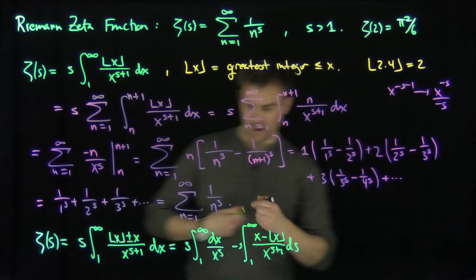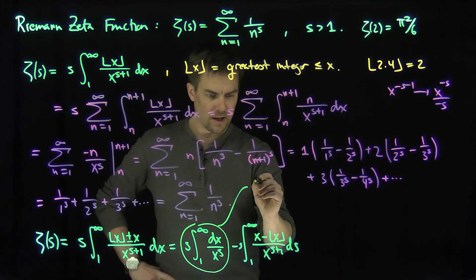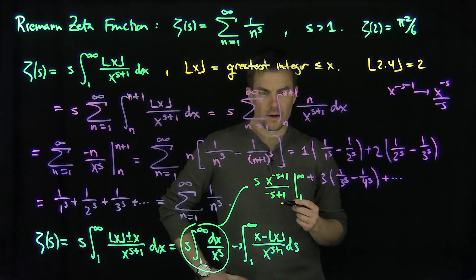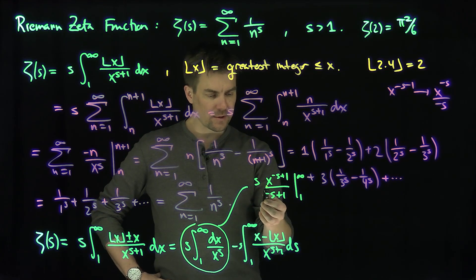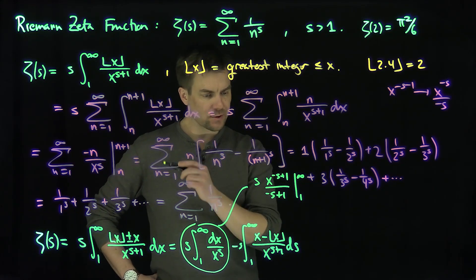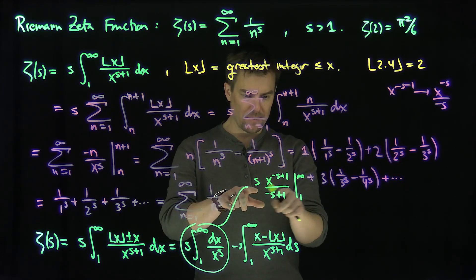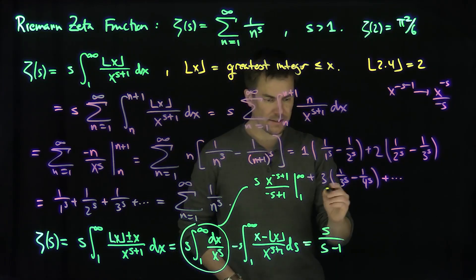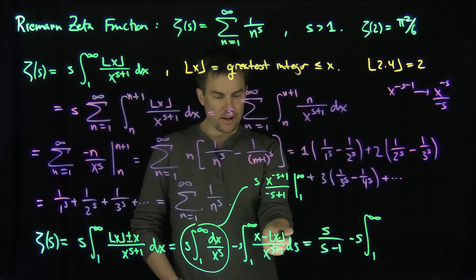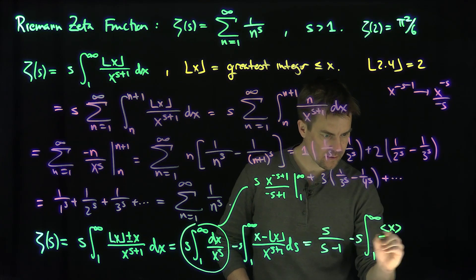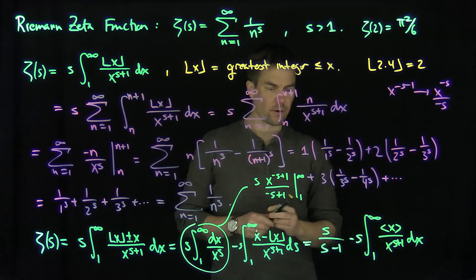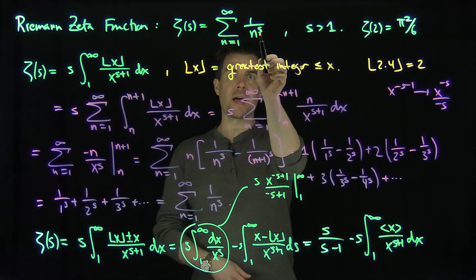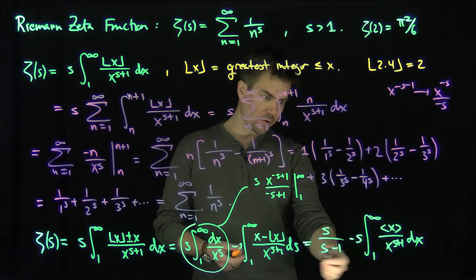The first integral gives s times x to the negative s plus 1 over negative s plus 1, evaluated from 1 to infinity. The upper limit vanishes, and plugging in x equals 1 yields s over s minus 1. So zeta of s equals s over s minus 1 minus s times the integral from 1 to infinity of the fractional part of x over x to the s plus 1 dx. This is very useful because as s tends to 1, we see exactly the structure of the singularity of the Riemann zeta function at s equals 1, consistent with the harmonic series divergence.